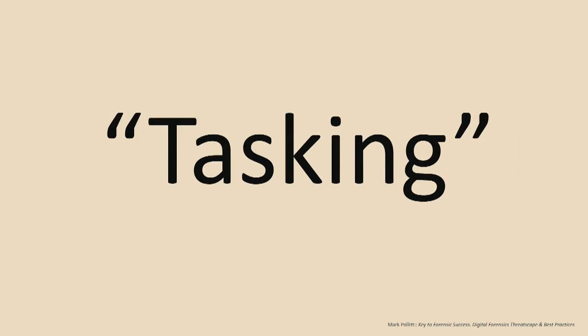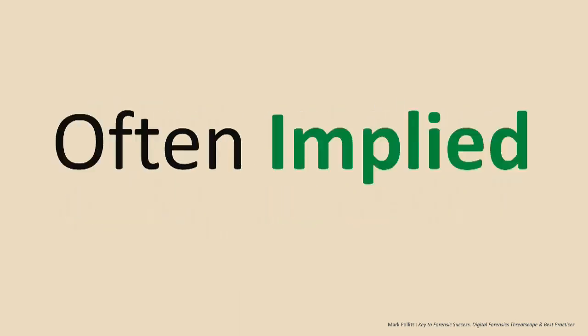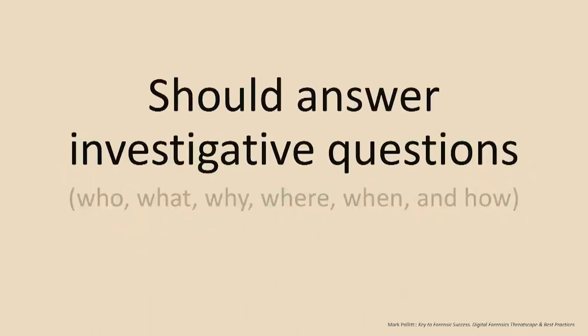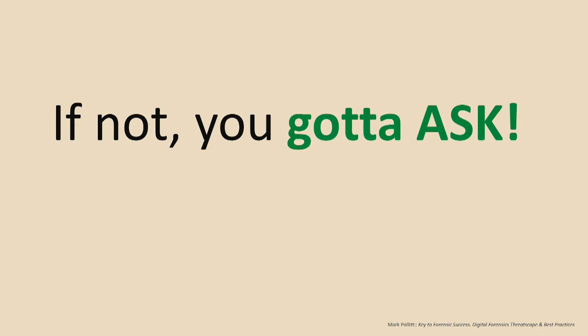So what is the tasking? The tasking is basically what they're asking us to do. And often, sadly, it's implied — here's a homicide case, here's a possible suspect, and you get very minimal information. What's left to us is to kind of figure it out, which is kind of scary. That tasking should help you answer who, what, why, where, when, and how. If you don't get that information up front, we've got to start asking for it.